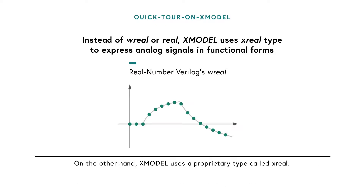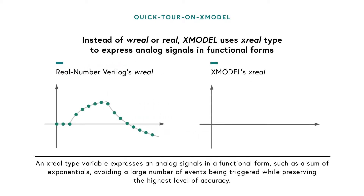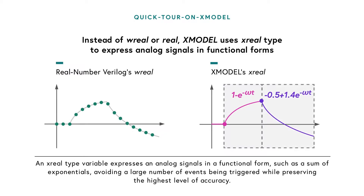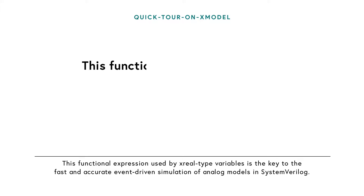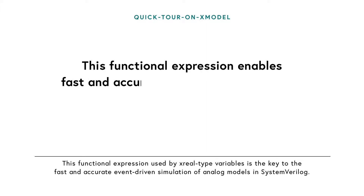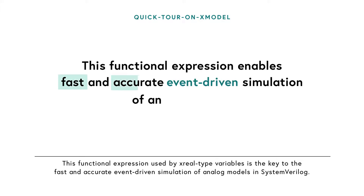On the other hand, X-Model uses a proprietary type called X-Real. An X-Real-type variable expresses an analog signal in a functional form, such as a sum of exponentials, avoiding a large number of events being triggered, while preserving the highest level of accuracy. This functional expression used by X-Real-type variables is the key to the fast and accurate event-driven simulation of analog models in SystemVerilog.